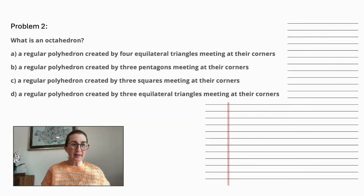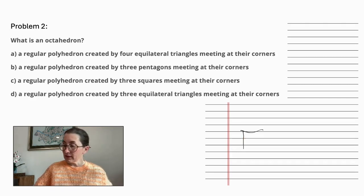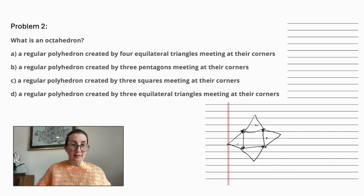Problem number two. What is an octahedron? An octahedron is a three-dimensional shape with eight flat triangular faces of equal dimensions. If I were to draw it in two dimensions, it would look something like this. Four triangles, and they meet at the corners.